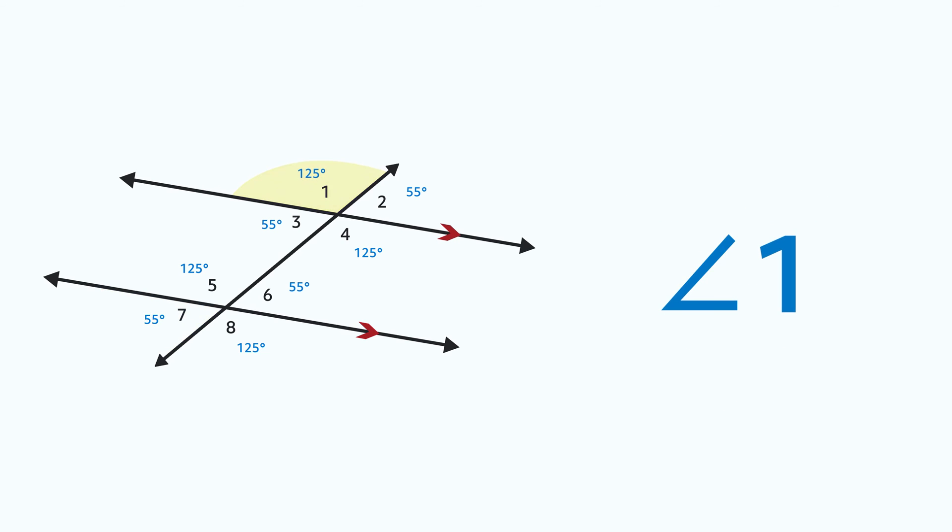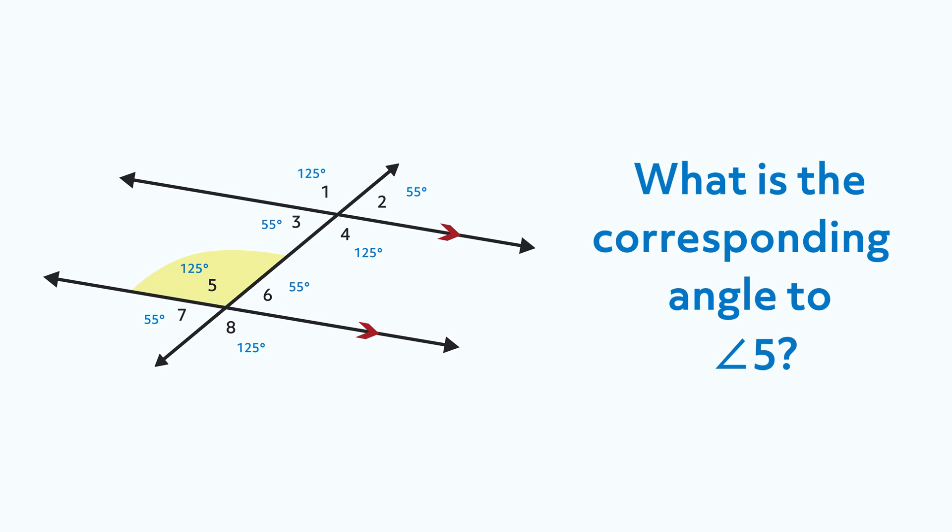What is the same-side exterior angle to angle seven? The answer is angle one. What is the corresponding angle to angle five? The answer is angle one.